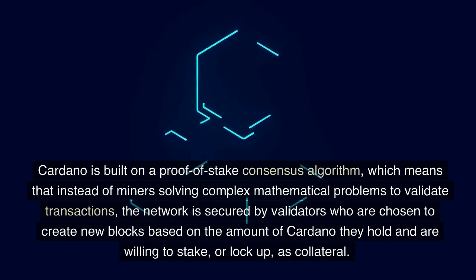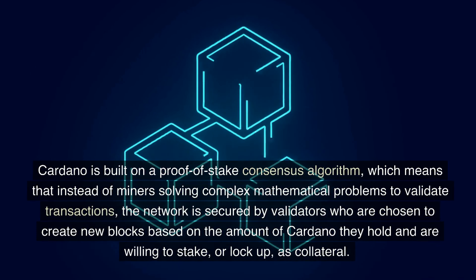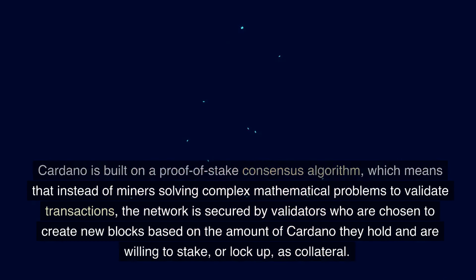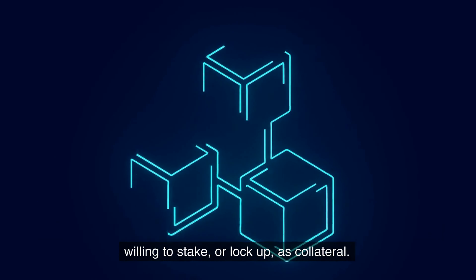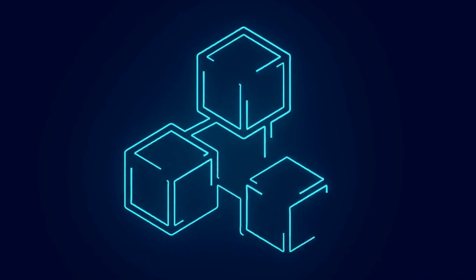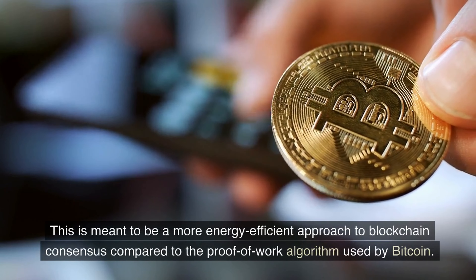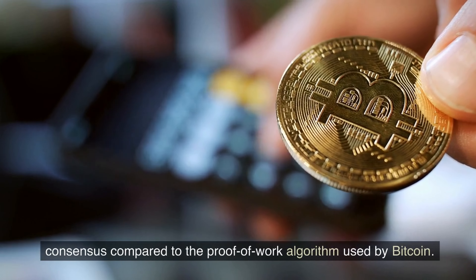Cardano is built on a proof-of-stake consensus algorithm, which means that instead of miners solving complex mathematical problems to validate transactions, the network is secured by validators who are chosen to create new blocks based on the amount of Cardano they hold and are willing to stake, or lock up, as collateral. This is meant to be a more energy-efficient approach to blockchain consensus compared to the proof-of-work algorithm used by Bitcoin.